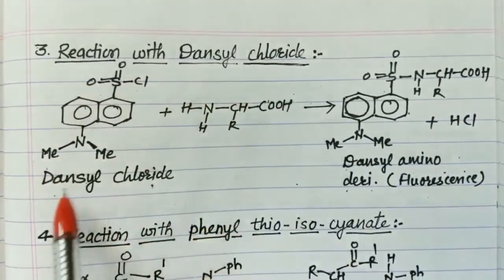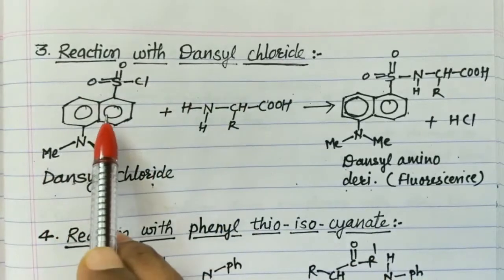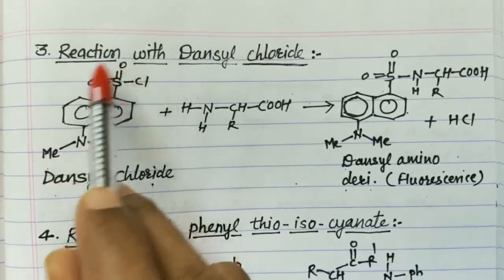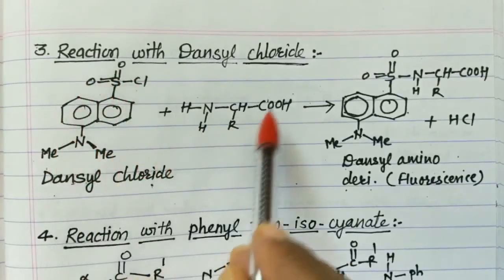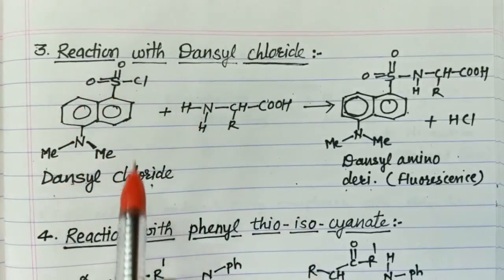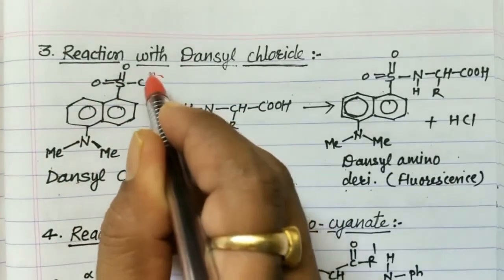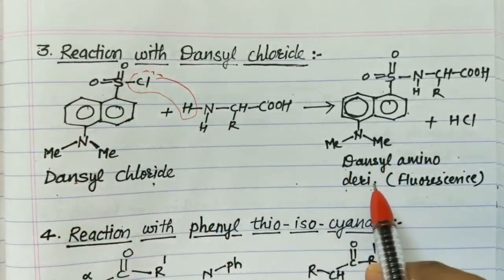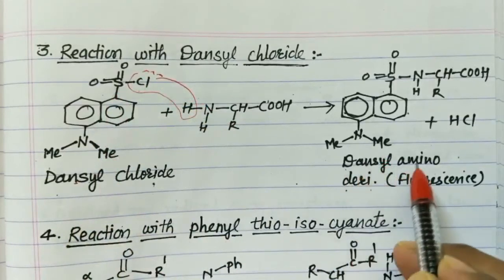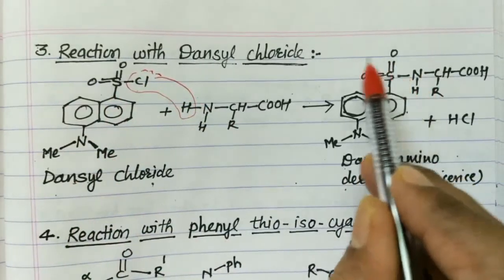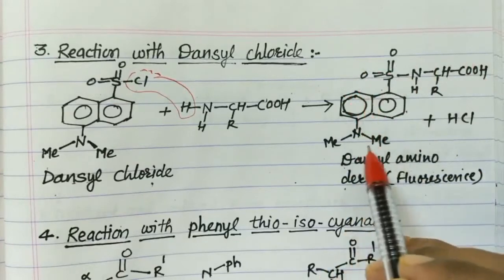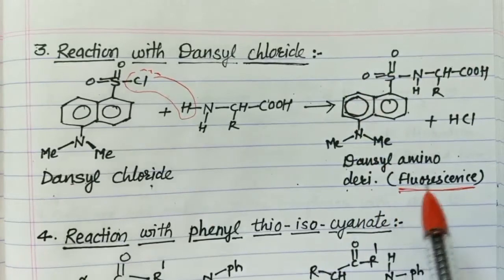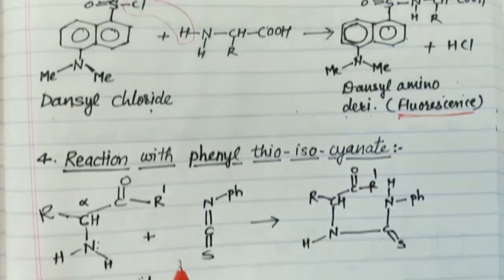Next reaction is the reaction with dansyl chloride. Dansyl chloride has a naphthalene ring attached to an N-dimethyl group and a sulfonyl chloride group. The amino acid reacts with dansyl chloride — HCl is eliminated — and you get the dansyl amino derivative, a compound which shows fluorescence.